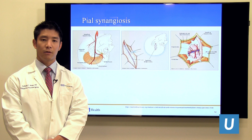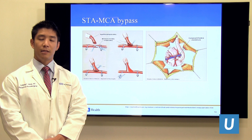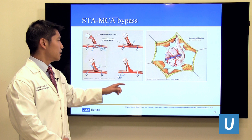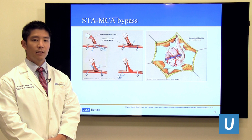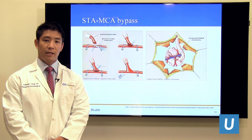This process takes a few months to occur. The direct bypass technique is different in that you take the same artery but instead of just laying it on top of the vessels, you sew it directly into the recipient vessel. You choose one of the MCA branches on the surface of the brain, open up a hole in it, and sew that vessel directly into the side of the recipient vessel. Direct bypass has the theoretical benefit of providing immediate flow augmentation to the brain.